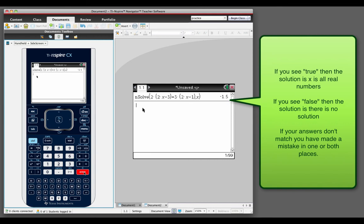On the TI INSPIRE CX, if we have an all real numbers solution, you'll see the answer true. If the calculator's answer is false, then that means you're in the case where you have no solution.